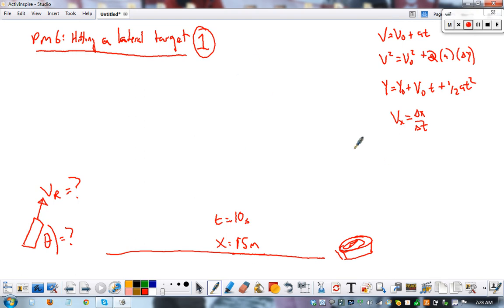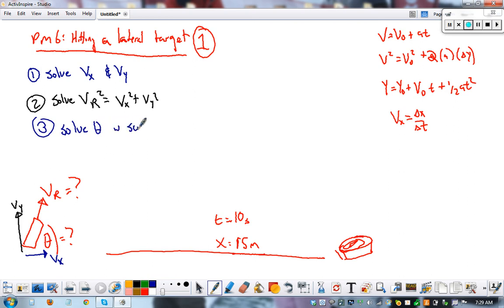So what we need to do is it's going to happen in a few steps. First step, I need to know the individual components as it's fired. So I want to know how much of this motion is actually forward motion and how much of this motion is actually upward motion, using these formulas. Once I know those, I can solve for the resultant velocity using the Pythagorean theorem. And then finally, you can solve for your angle with soh-cah-toa.